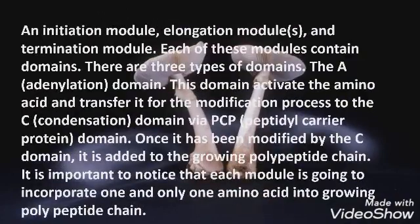As mentioned before, there are three types of modules: an initiation module, an elongation module, and a termination module. Each of these modules contains domains. There are three types of domains: the A adenylation domain, which activates the amino acid and transfers it for modification to the C condensation domain via the PCP peptidyl carrier protein domain. Once it has been modified by the C domain, it is added to the growing polypeptide chain. It's important to note that each module incorporates one and only one amino acid into the growing polypeptide chain.